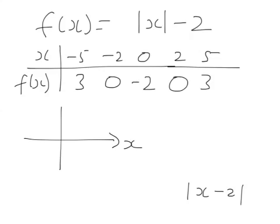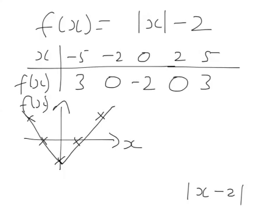Drawing this on a graph: we have points (5, 3), (2, 0), (0, -2), (-2, 0), and (-5, 3). All the negative values of x give the same answer as the positive values of x, because taking the modulus of a negative number gives the same as the positive number. So now we've got mod x and then take away 2 — the graph is similar to y equals x minus 2, but the negative values of x are reflected in the y-axis.